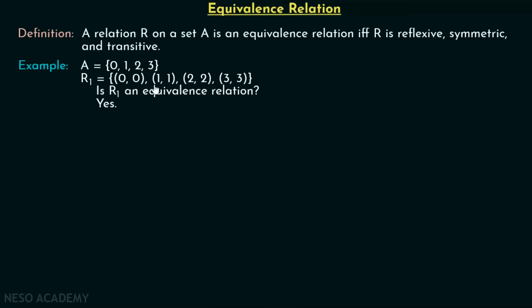This relation is also symmetric and transitive — there is no doubt about this, you can check on your own. Therefore, R1 is an equivalence relation because all three properties are satisfied.